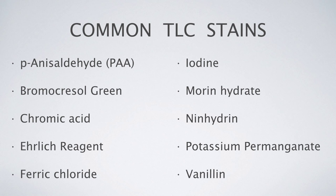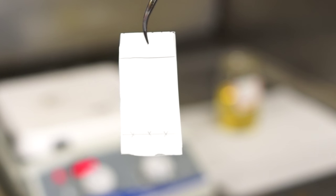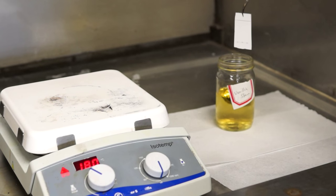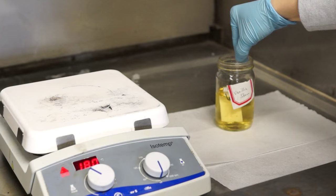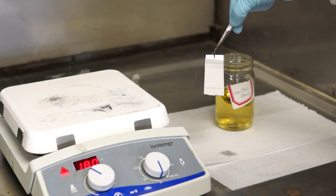Here are some common TLC stains you might use when in the organic chemistry laboratory. After you've run your TLC plate, you may want to stain it using Vanillin stain. To do so, take your TLC plate and submerge it in Vanillin. Then, carefully wipe off the excess before putting it on a hot plate.